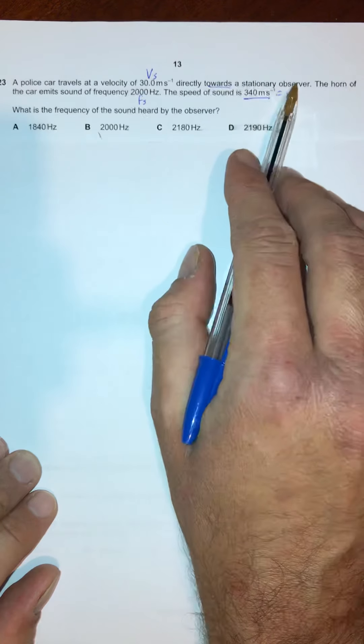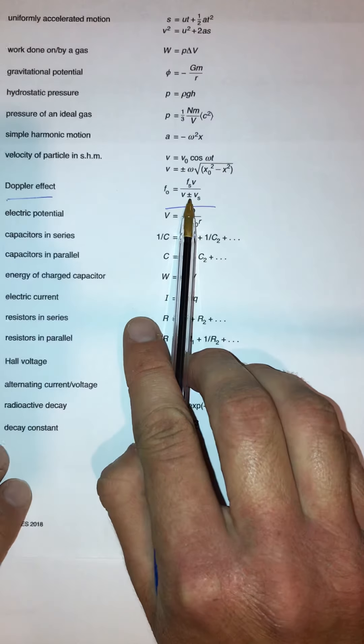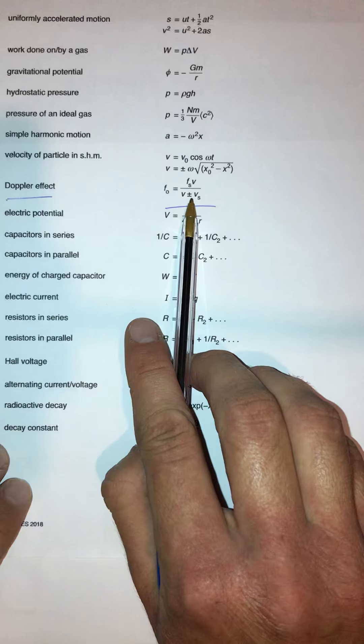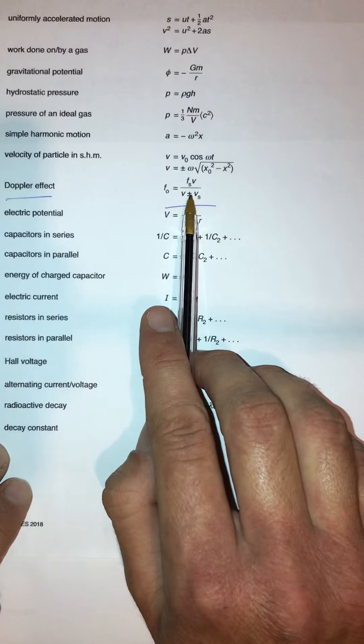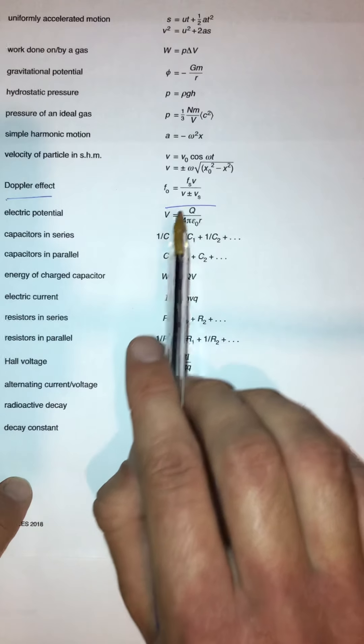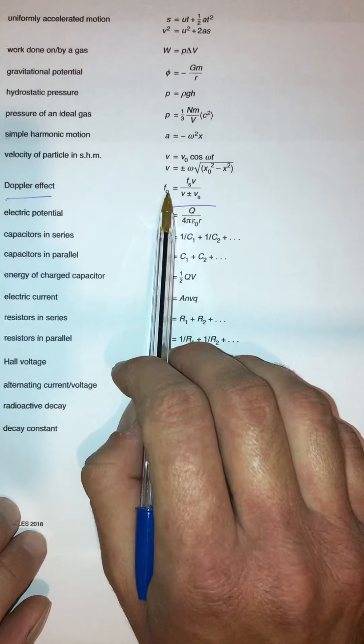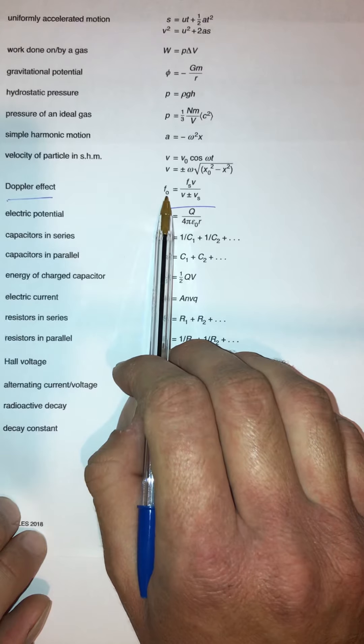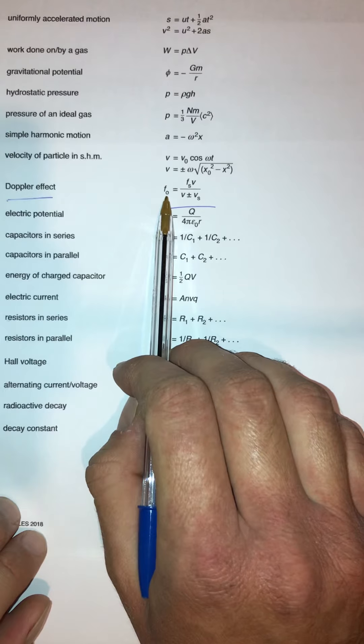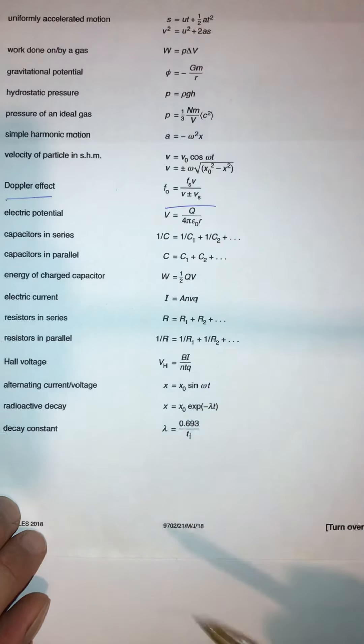Now, because the car is speeding towards the observer, we have to subtract in the denominator here. The plus or minus in the denominator is dependent upon whether the observer and the source are moving towards each other or away from each other. When something is speeding towards you, you're going to hear that sound at a higher pitch.